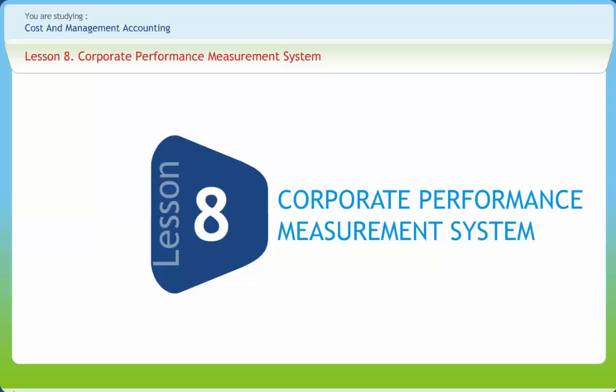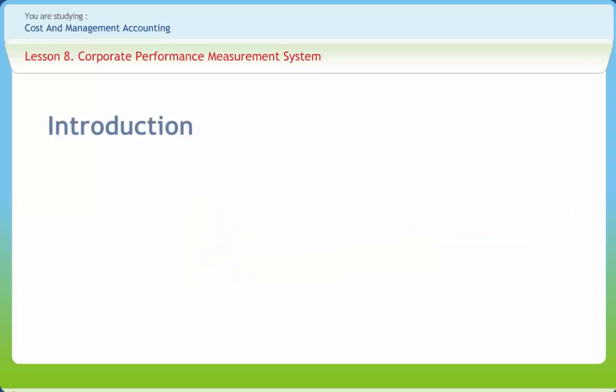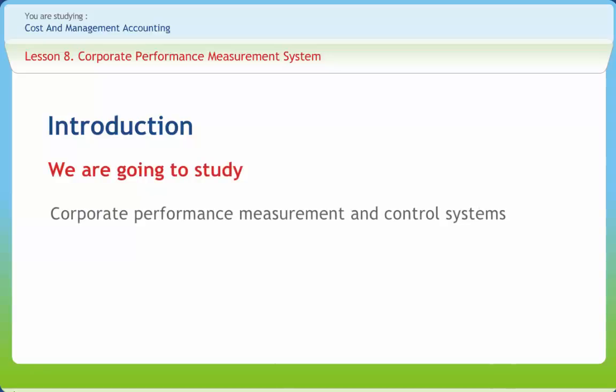Corporate Performance Measurement Systems have grown in use. Firms adopt Corporate Performance Measurement Systems for a number of reasons, but the main reason is to improve control over the firm in ways that traditional accounting systems have not allowed.